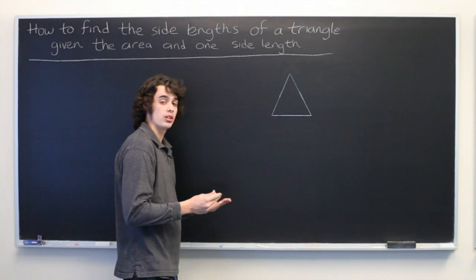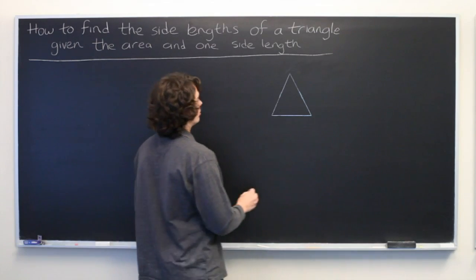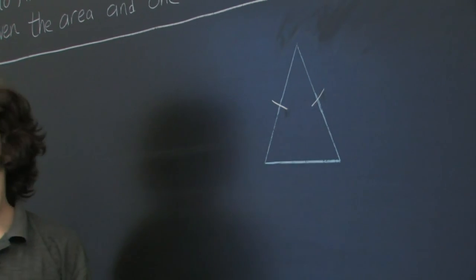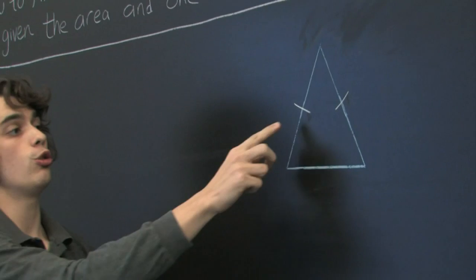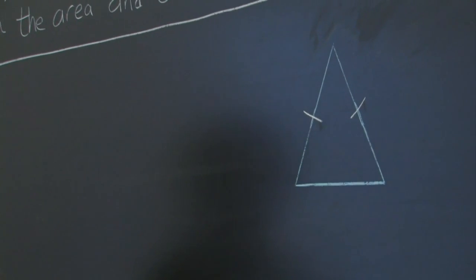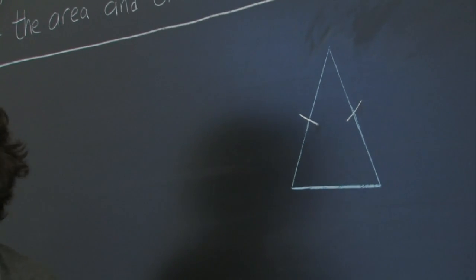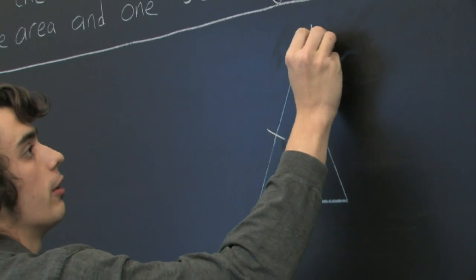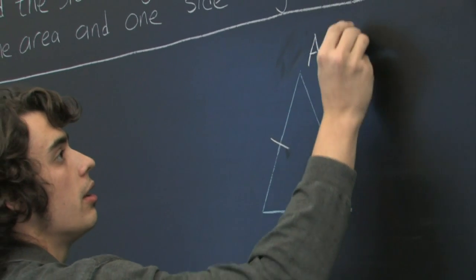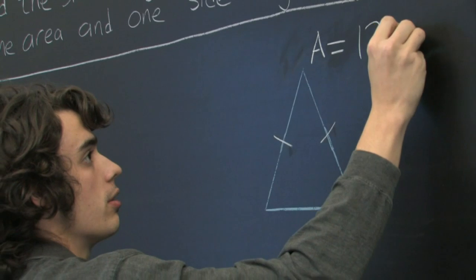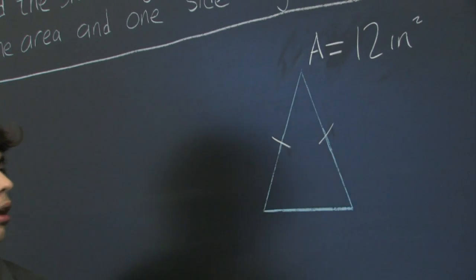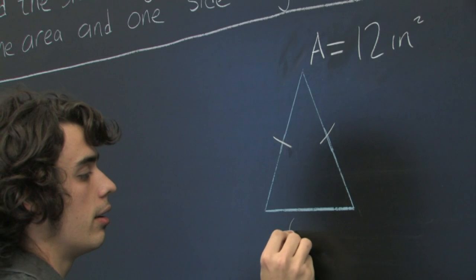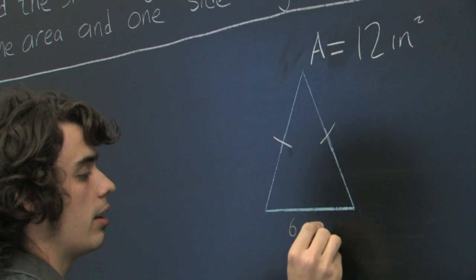So, we need one more piece of information in order for this to be possible. We're going to assume that we know that our triangle is isosceles, meaning that two of the sides are of the same length. So, let's walk through an example. Suppose that we know that the area of this triangle is equal to 12 square inches, and suppose we know that the length of the base is 6 inches.